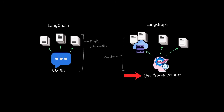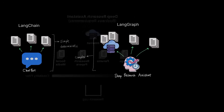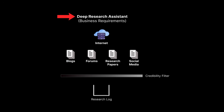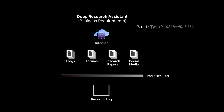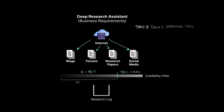Let's go back to the deep research assistant as an example to understand the difference with a little more granularity. Let's say the business requirements were to first browse the web, then find relevant details about Tesla's earnings call. The assistant then needs to read and comprehend all news sources from blogs, forums, research papers, and social media, and finally decide if the information is trustworthy and useful.